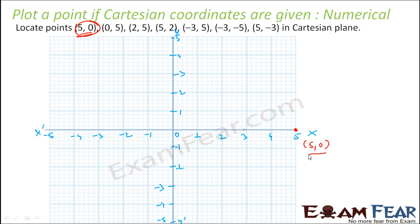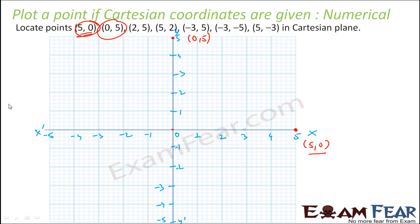Now for the point 0 comma 5: x is 0, which is on the y-axis, and y is 5, which is this point on the y-axis. If we draw perpendicular lines where these two lines meet, we get this point. So this is 0 comma 5 — it lies directly on the y-axis.